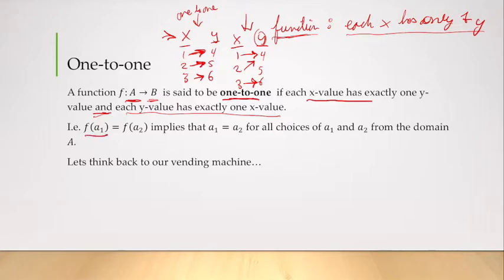So f of a sub one equals f of a sub two implies that a sub one equals a sub two for all choices of a sub one and a sub two in the domain. This is the formal definition. I want you guys to think back to our vending machine. So we have exactly one x going to exactly one y.